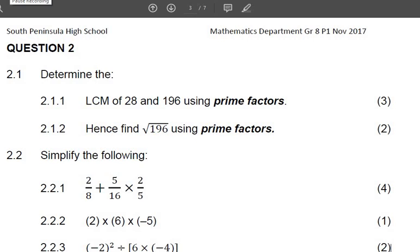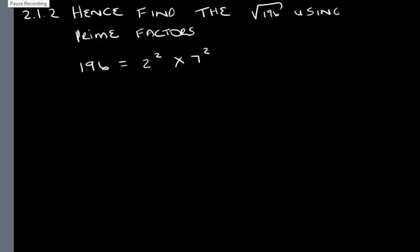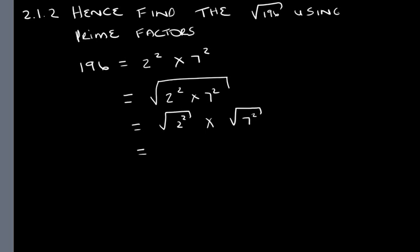2.1.2 says, hence find the square root of 196 using prime factors. 196 is equal to 2 squared times 7 squared. We determined that in the previous question. So now we need to take the square root of 2 squared times 7 squared. Which is the same thing as the square root of 2 squared times the square root of 7 squared.